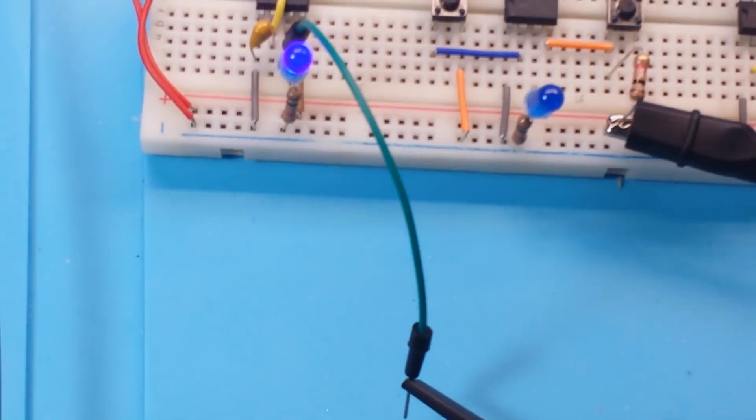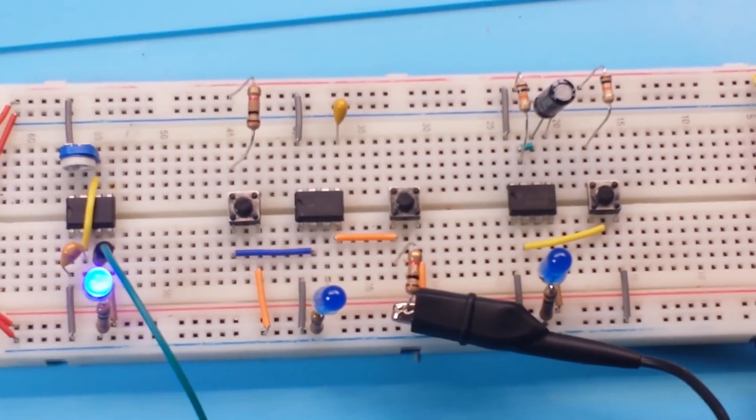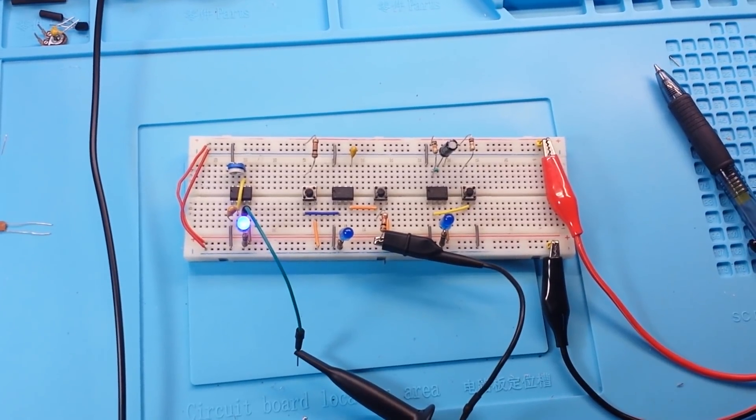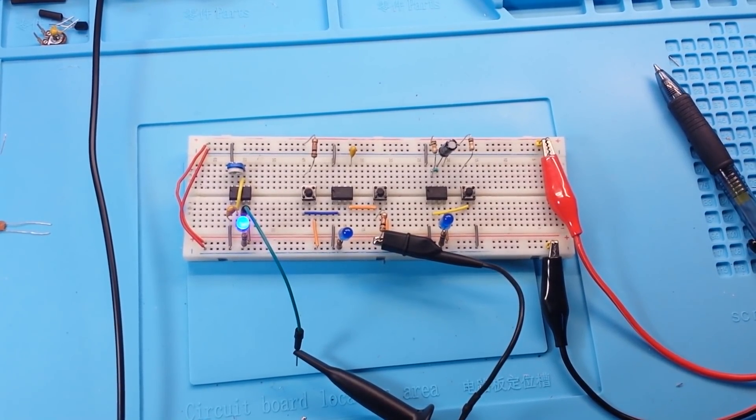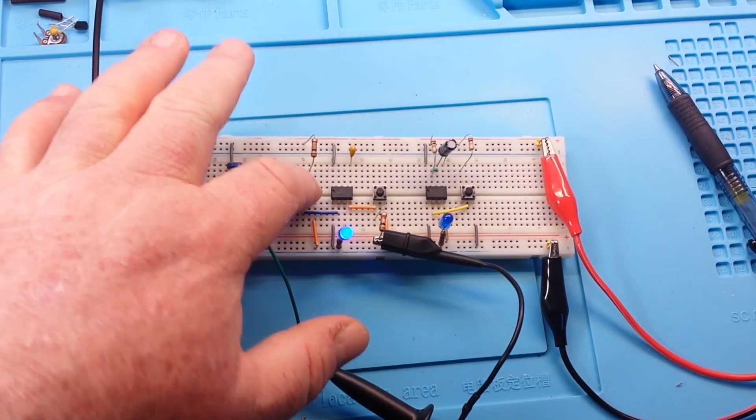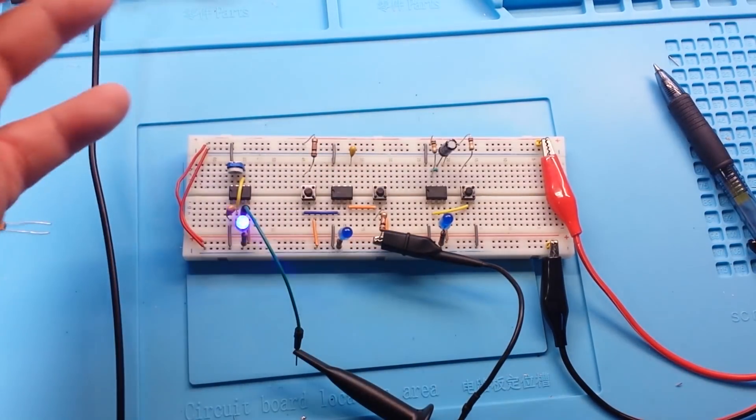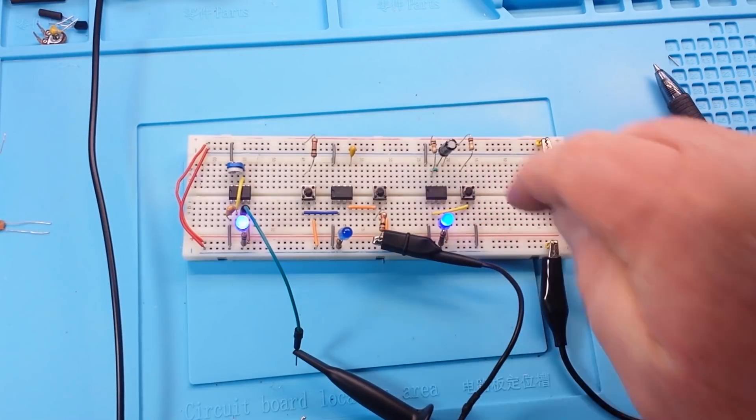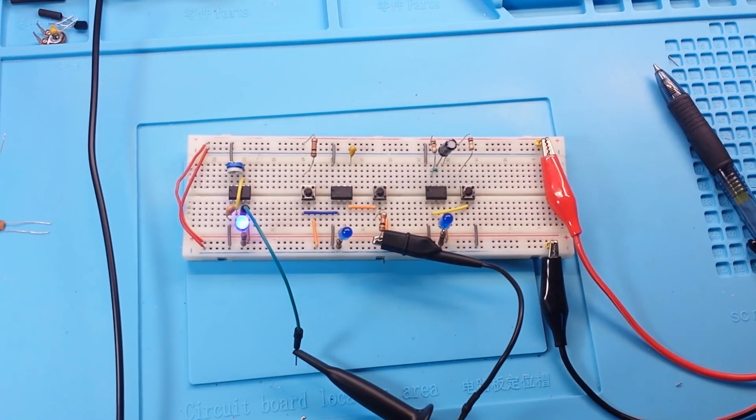So friends, that is the beauty of the 555 timer. It can be whatever you need it to be: an astable multivibrator, a set-reset latch, or just a timer. Imagine that. Hope you guys enjoyed this. If you did, give me a thumbs up, feel free to comment, share, and don't forget to subscribe. Big thanks to all the patrons and big thanks to you guys for watching. That's it, I'm out. Peace.